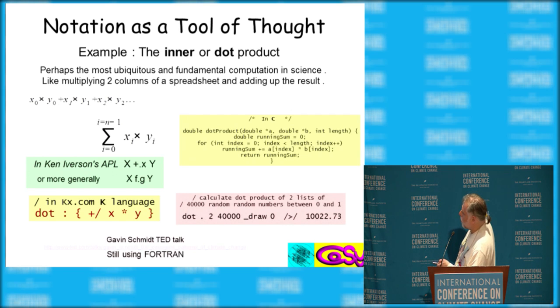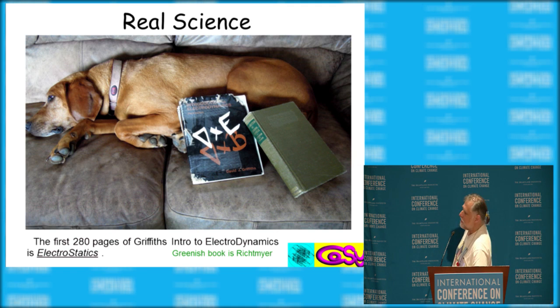Here actually, to show how radically different it is, here is the dot product on two sets of 40,000 random numbers between zero and one each. Gavin Schmidt in his TED talk talks about how almost as proud of how they still use Fortran. And so you have these inscrutable million line programs.